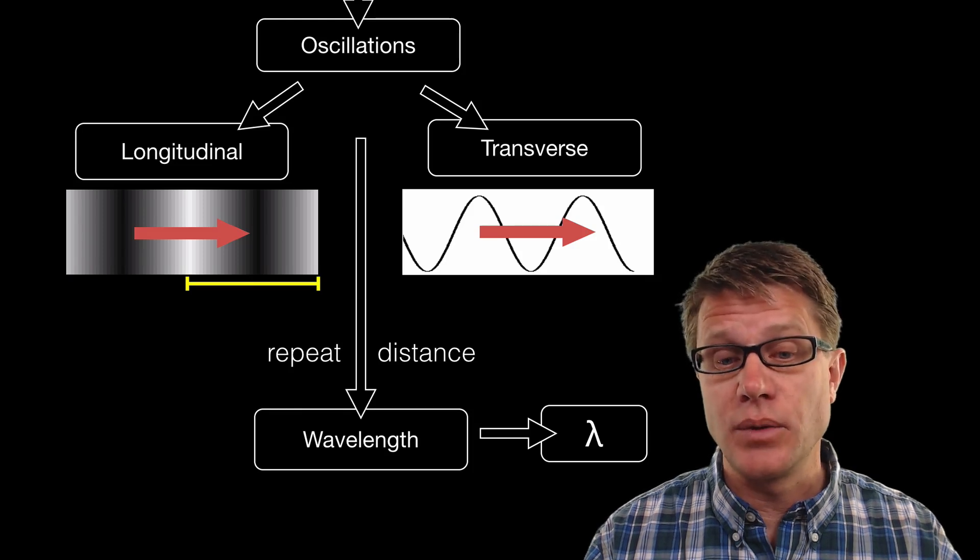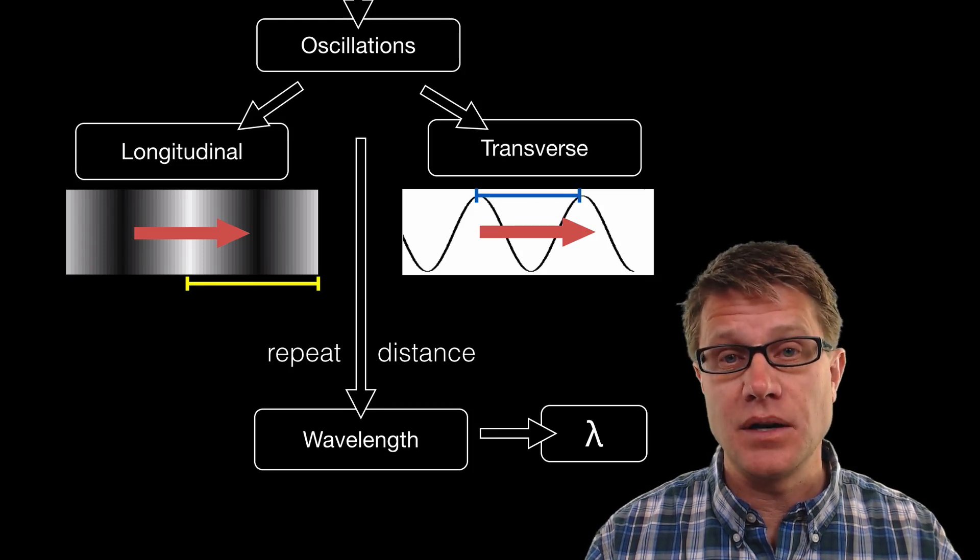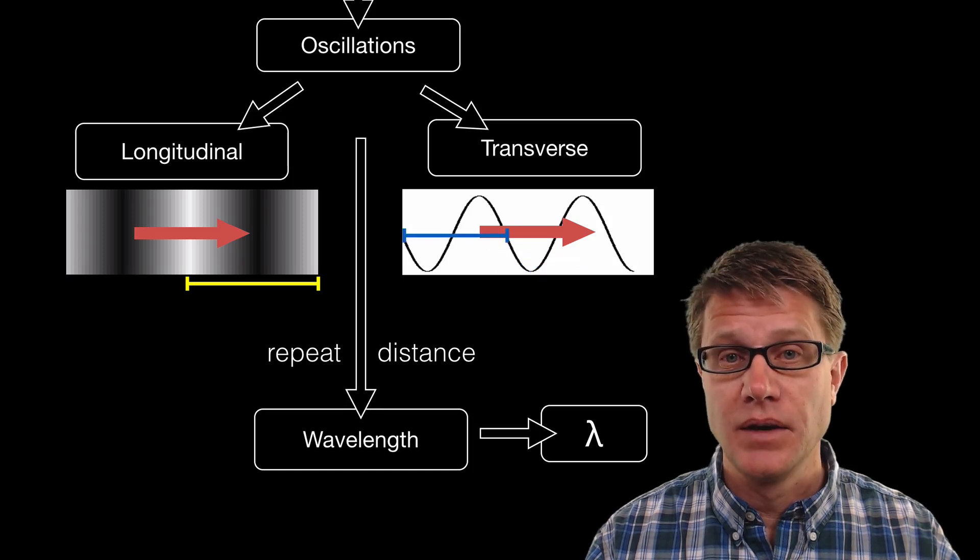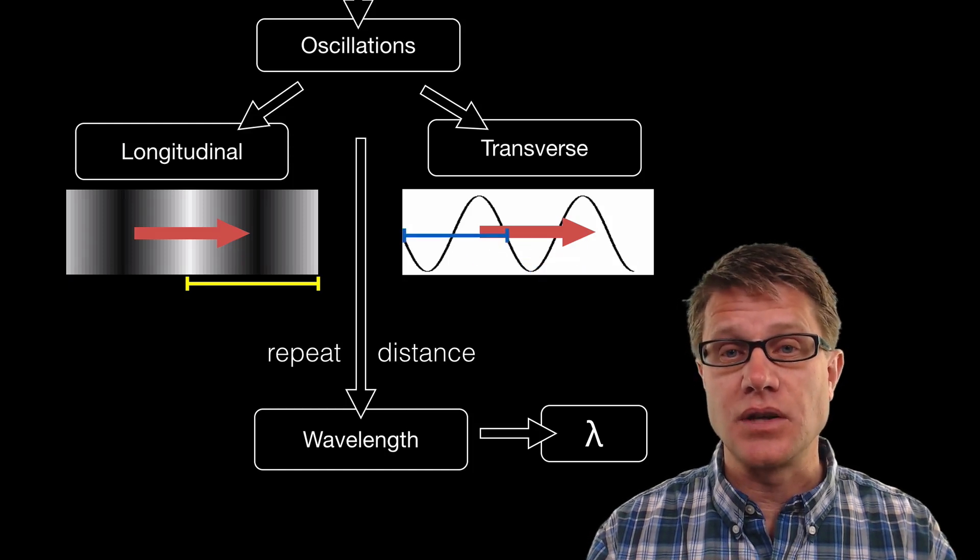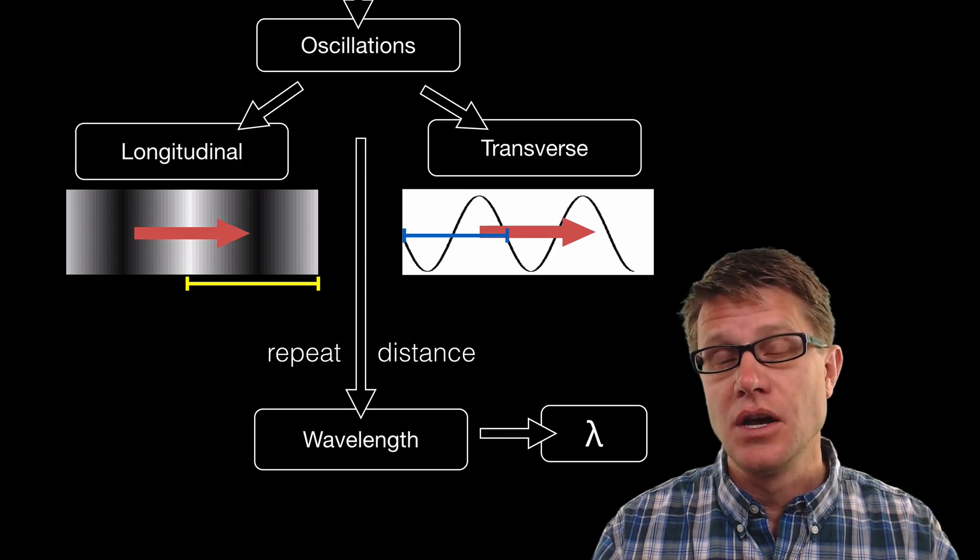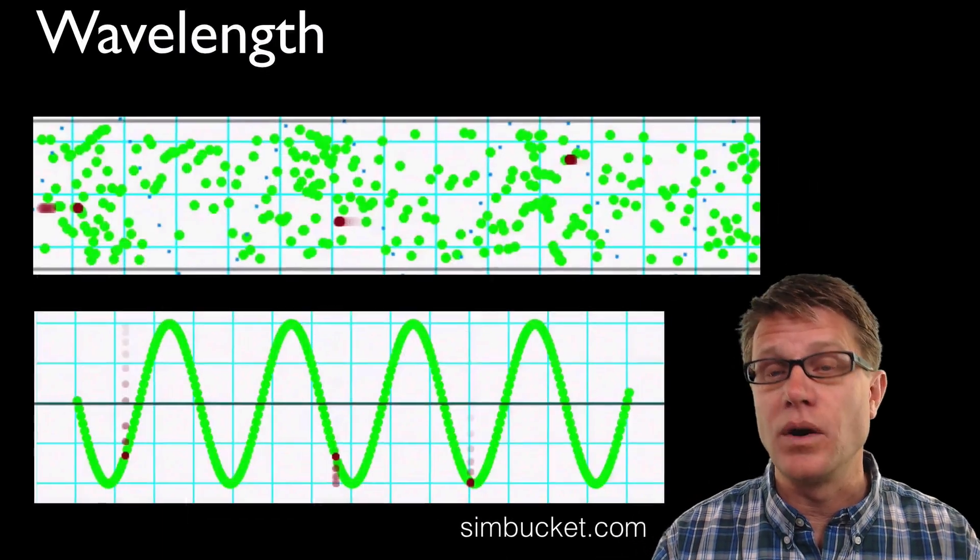We could look at the transverse waves as well. This would be one lambda or one wavelength. But this would also be lambda, and this would also be lambda here as well. It's the distance between those oscillations, and it doesn't matter where you start measuring as long as you measure the same amount one wavelength down.